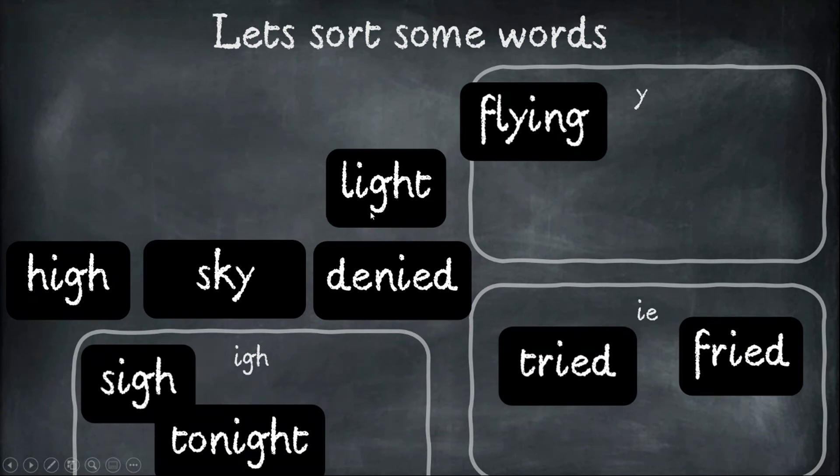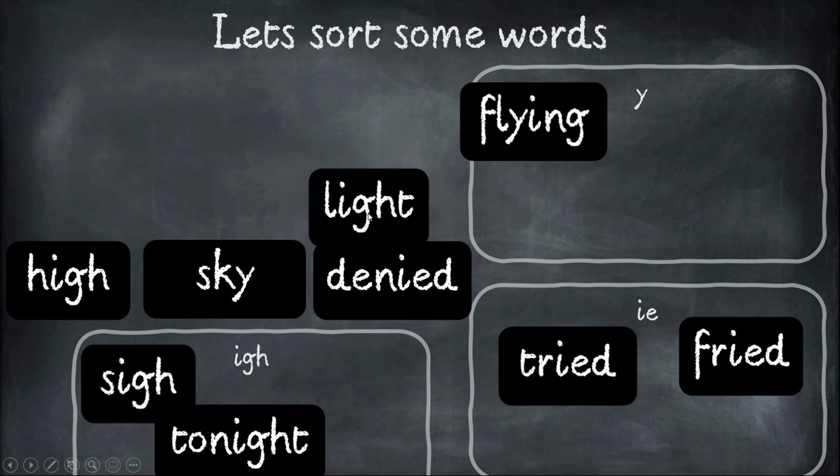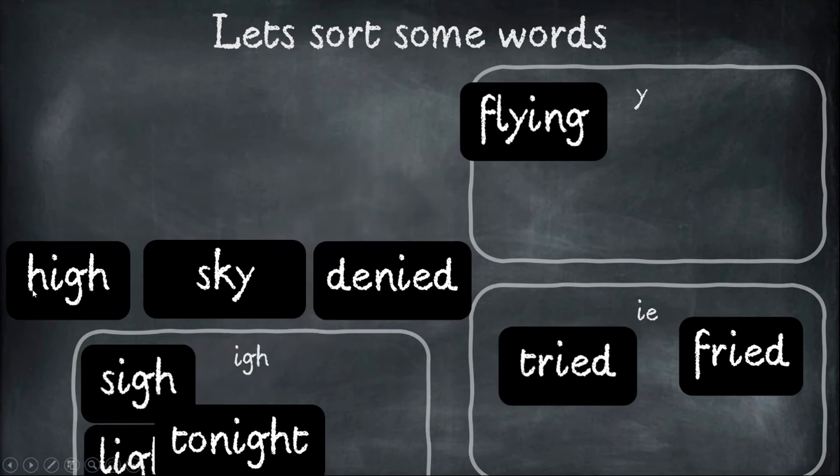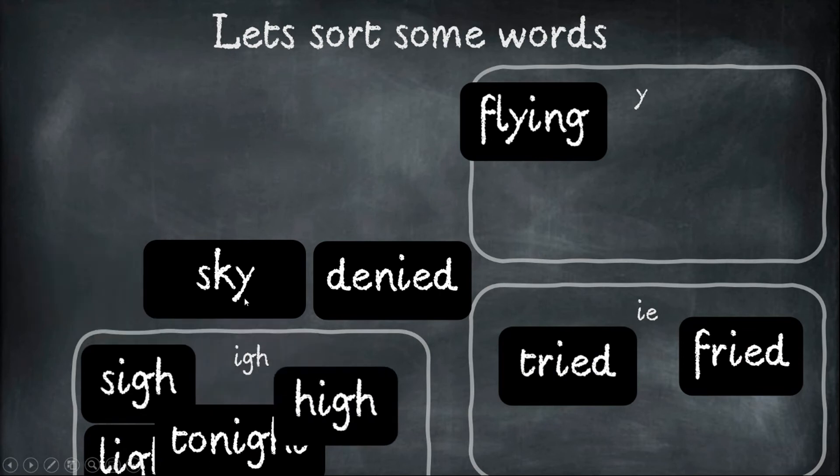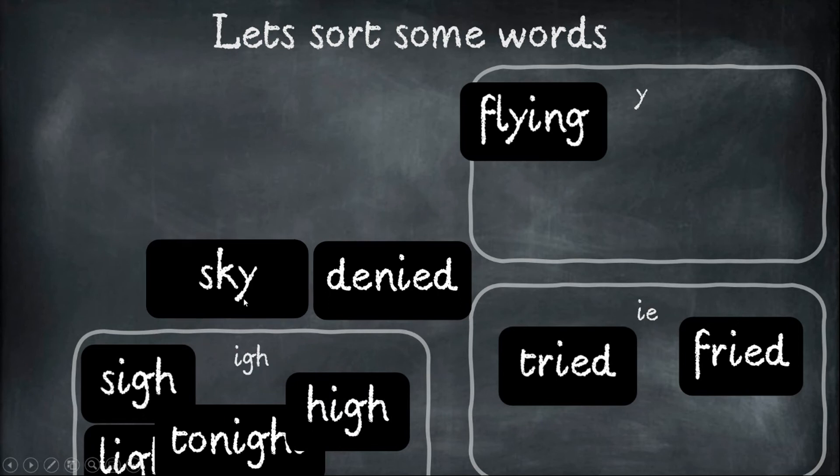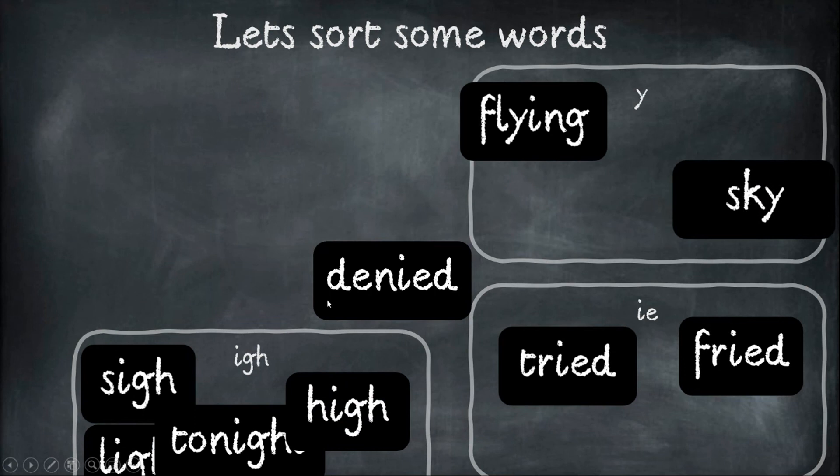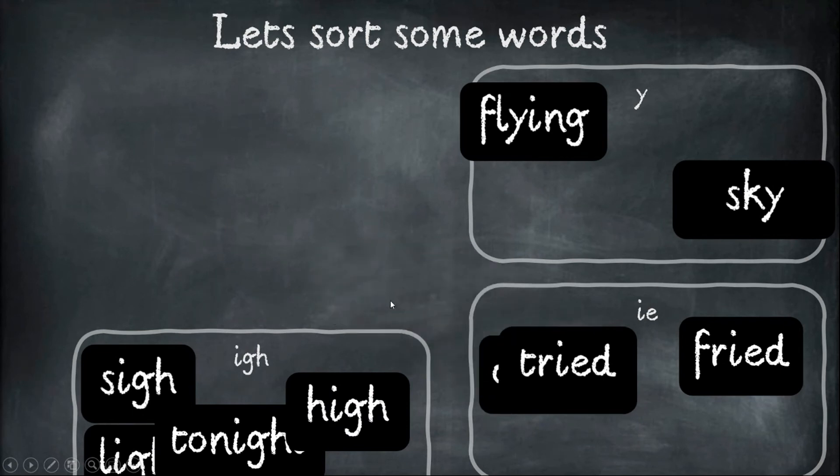Light - the IGH is making the I sound. High - the IGH is making the I sound. Sky - the Y is making the I sound. And finally, denied - the IE is making the I sound.